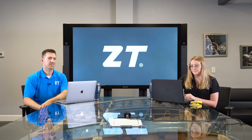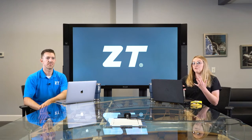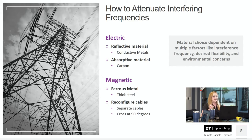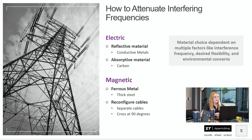Once you figure out what you've got, we're going to figure out how to attenuate that interference. This is going to be dependent on your specific application, due to factors like environmental concerns, temperatures, or chemical exposure. A big one is the flexibility you need in your system. When talking about electric interference, there are two types of shielding materials: reflective materials, made of conductive metals — the interference comes in and gets reflected right off — and absorptive materials, which are a foam or silicone or polymer that will absorb the signal as it passes through rather than reflect it.